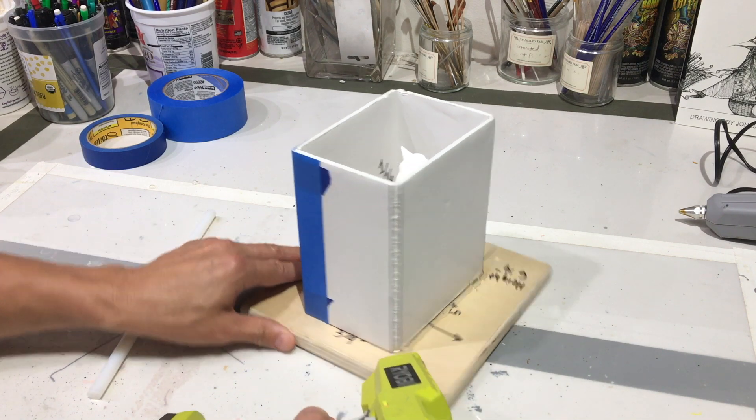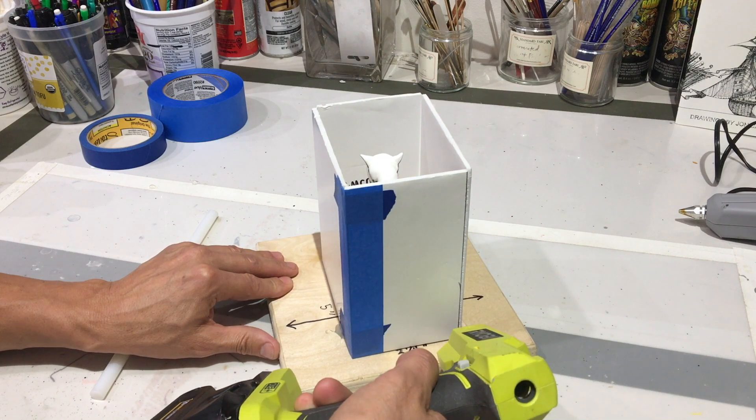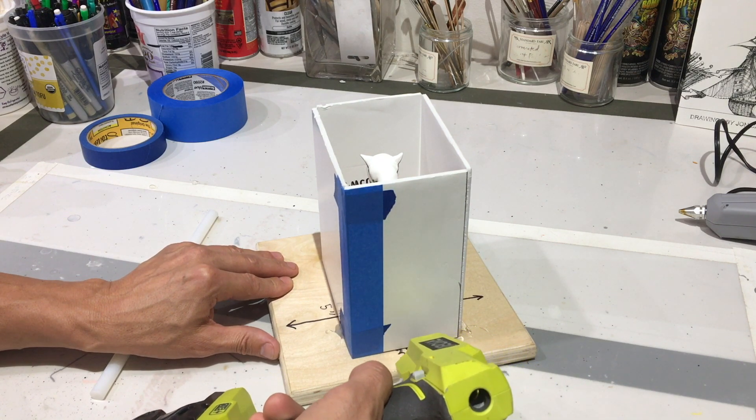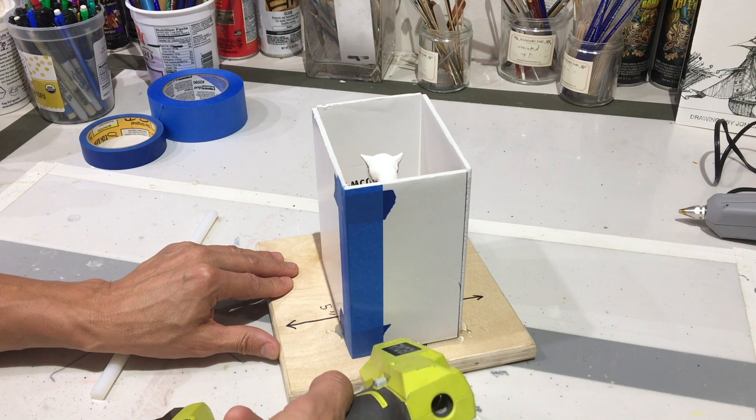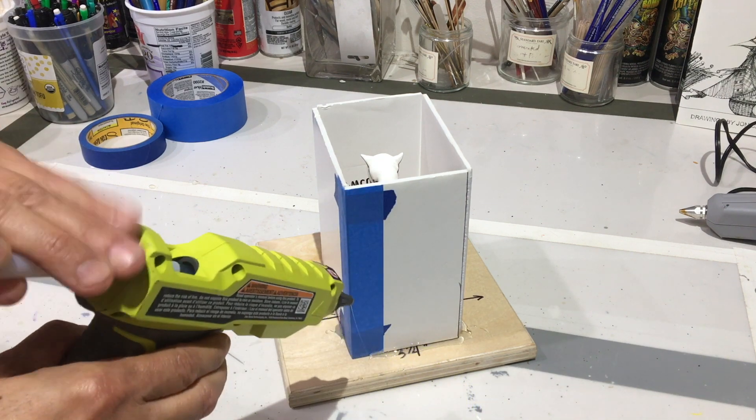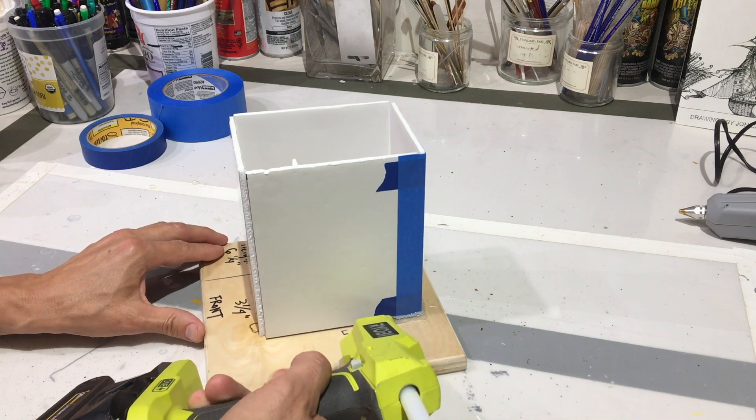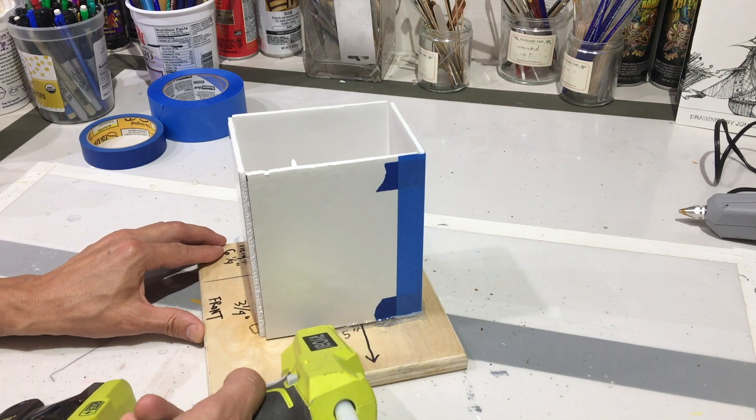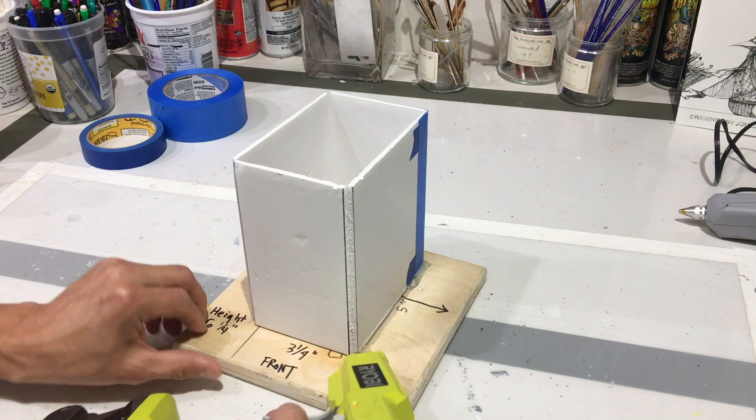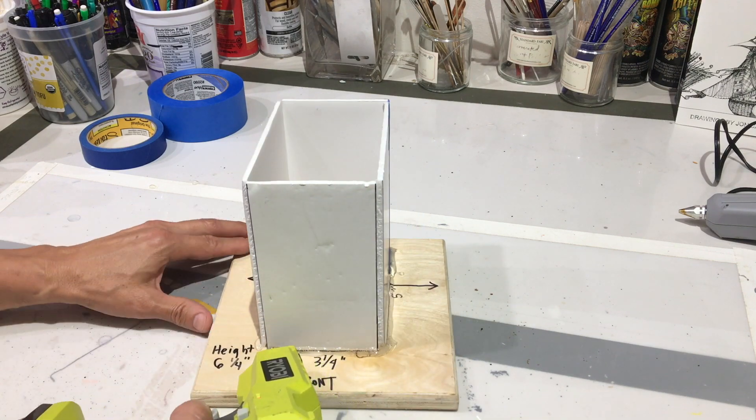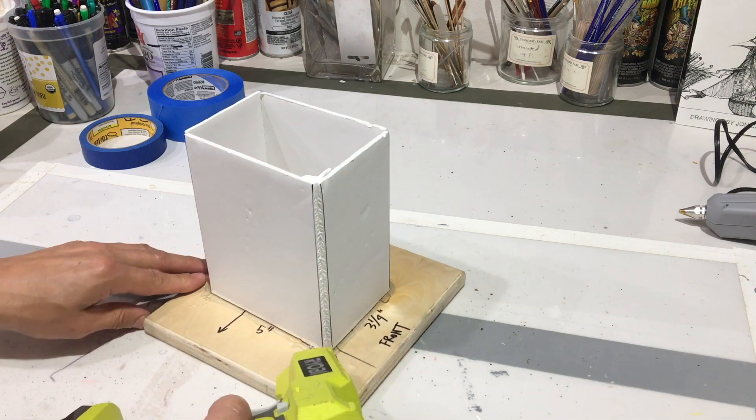The silicone will find the tiniest pinhole to leak out of. I'm using a Ryobi cordless glue gun here. This thing has become a studio essential for me. It's a little pricey, but having cords run all over the studio drives me crazy. And it looks a little funny here because it's been modified to fit a Dewalt battery. But if you want to check it out, there's a link in the description. I love this thing.